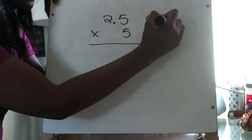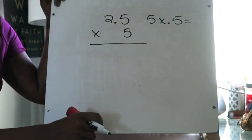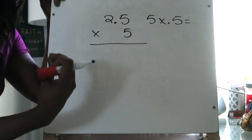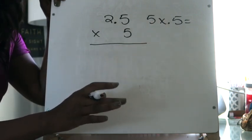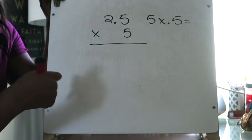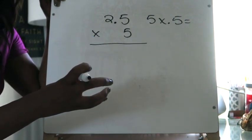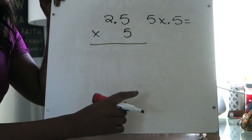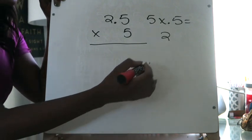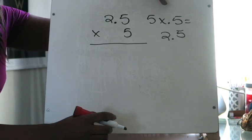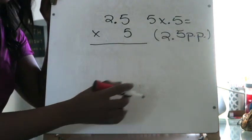First, I'm going to multiply 5 by the tenths place only: 5 times 5 tenths. I'll let myself think of that as just 5 times 5 to get the basic fact — 5 times 5 is 25 — then remind myself I'm dealing with tenths, so it's 25 tenths. Regrouping: I can't have more than nine of any piece, so I make groups of 10. In 25 tenths there are two groups of 10, which gives me 2 wholes, with 5 tenths left over. So 5 times 5 tenths equals 2 and 5 tenths. I'll label that as a partial product.